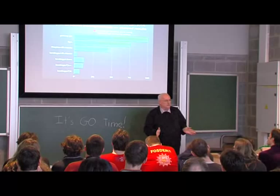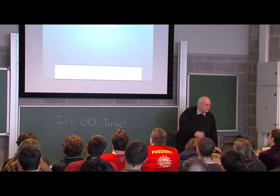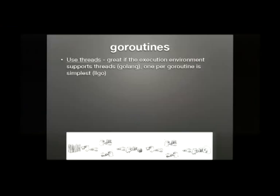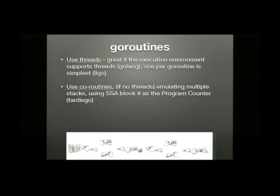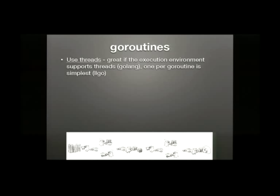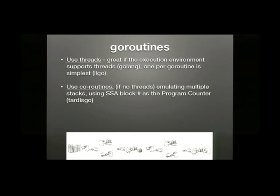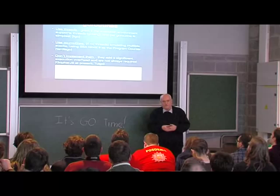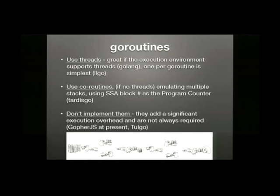On the question of goroutines: if you've got threads, you can use threads, and the simplest thing to do is one thread per goroutine in terms of generating code. If you haven't got threads, as TARDIS Go doesn't have, you have to use coroutines and keep a pseudo-stack for each of your coroutines. I actually use the SSA block number as a program counter — that's my top tip. But there's a strong argument for not having goroutines at all in some circumstances. If you're making a callable library, and I think much of this cross-language work will be around callable libraries, there's a very good case for not having goroutines, because it's going to make it much faster.